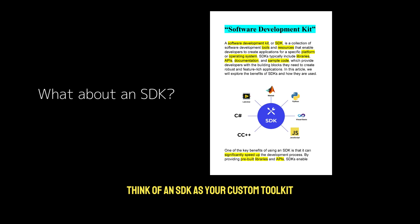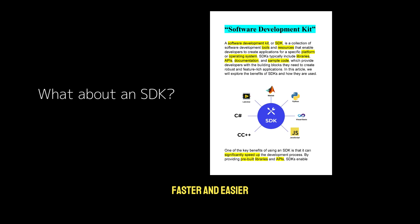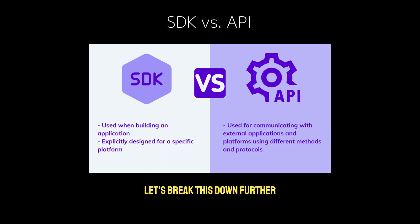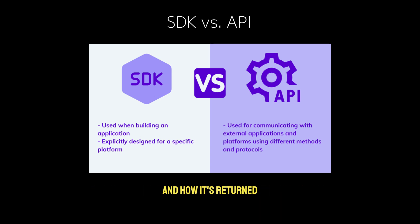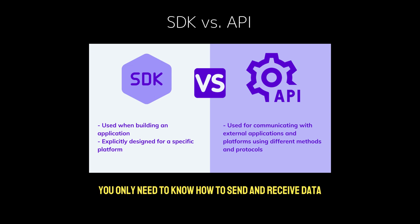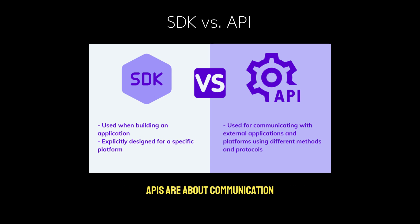Think of an SDK as your custom toolkit specifically designed to make working with an API faster and easier. An API provides a set of rules, an interface for interaction between systems. It's the protocol that dictates what data is requested and how it's returned. You don't need to understand how the underlying service works — you only need to know how to send and receive data in a specific format. APIs are about communication, not implementation.